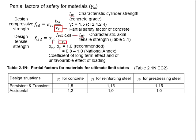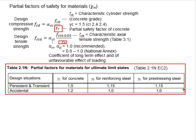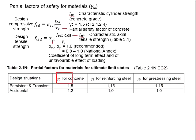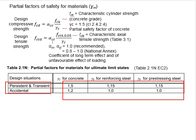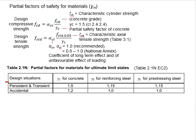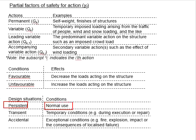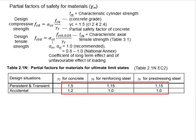The partial factor of safety for materials is given in a table in the Eurocode, differentiating between concrete and steel elements. Due to higher consistency and quality control, the factors of safety for steel elements are normally smaller than for concrete. The values differ by design situation: persistent, meaning normal usage; transient, meaning temporary conditions; and accidental, meaning exceptional conditions. You may use the partial factor of safety for materials for the ultimate limit state accordingly.